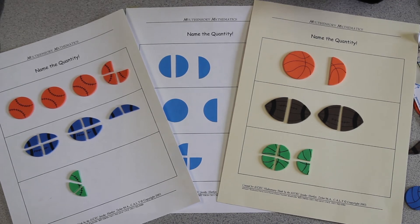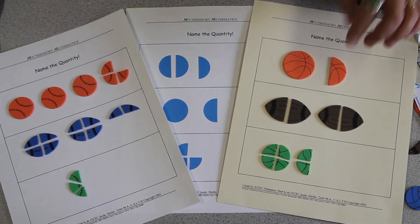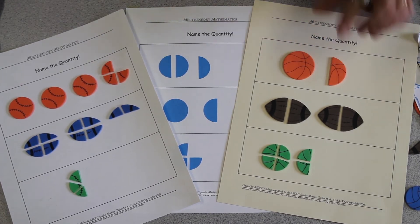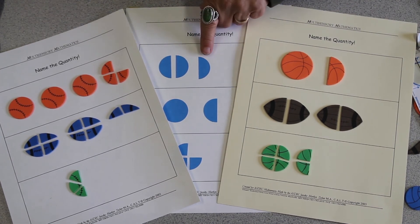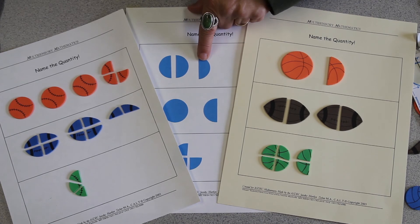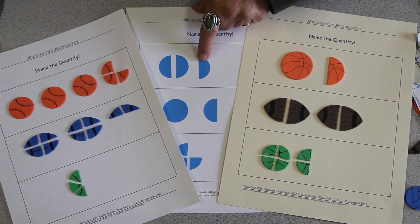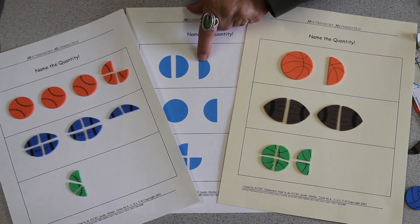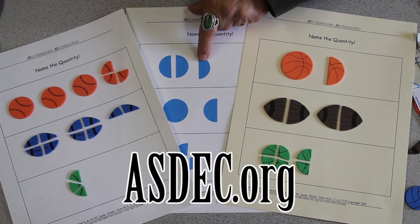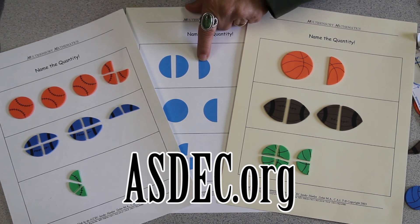Here at ASDEC, we advocate the concrete representational to abstract approach. It's an instructional sequence where students use concrete manipulatives to illustrate the math concepts. Then they go to the representational or pictorial level before moving on to abstract where they use only numbers. You can find us on the web at www.asdec.org.